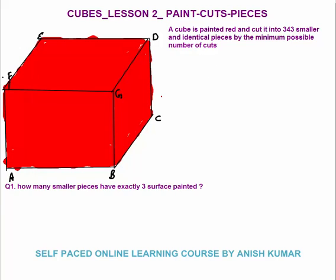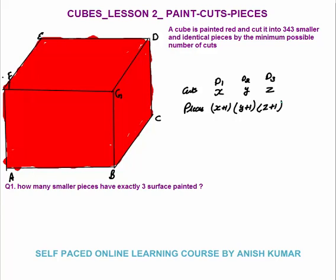If the cuts are in direction D1, D2, and D3, the number of pieces will equal (x+1)(y+1)(z+1). We want the pieces to be 343 with the minimum possible number of cuts. You must know that 343 is 7 cubed, so the minimum number of cuts would be when 7×7×7 equals 343 pieces.